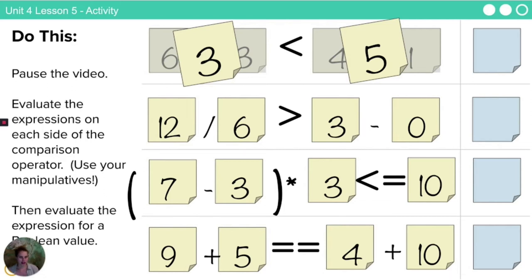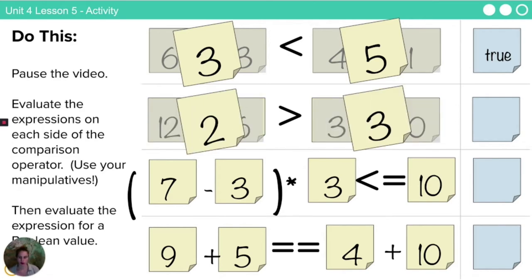We have 3 is less than 5. Is that a true statement? Well, yes it is. 12 divided by 6 is greater than 3 minus 0, also known as 2 is greater than 3. No, it's not. That is a false statement.